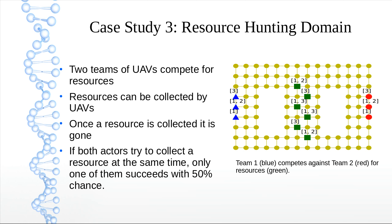The third case study concerns a situation with two teams of UAVs — the blue one and the red one — competing for resources, the green ones. Once a resource is collected by one actor, the other can no longer collect it. If both actors try to collect a resource at the same time, only one succeeds, with a 50% chance deciding which actor collects it.